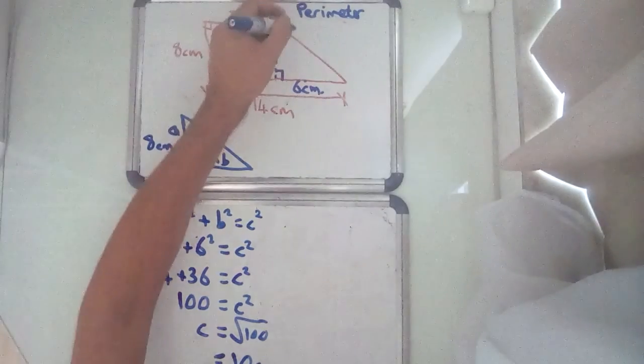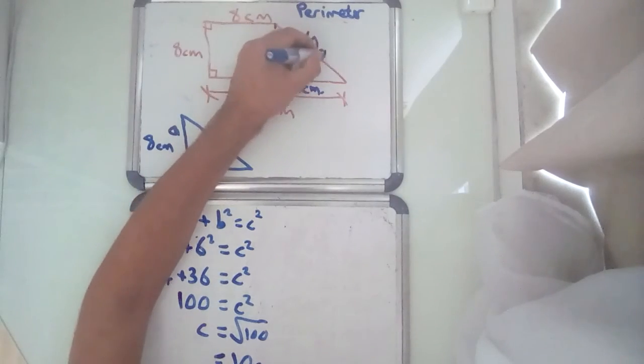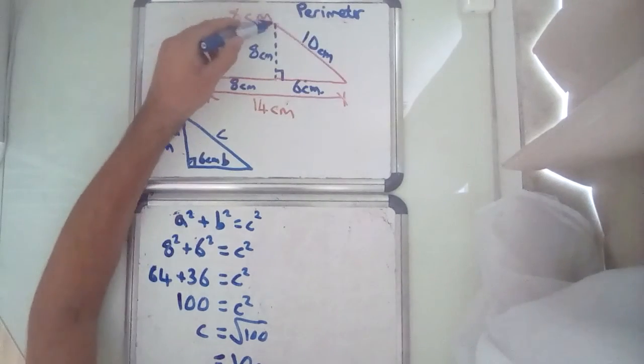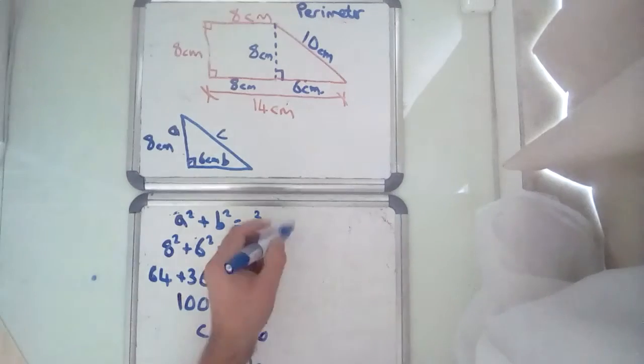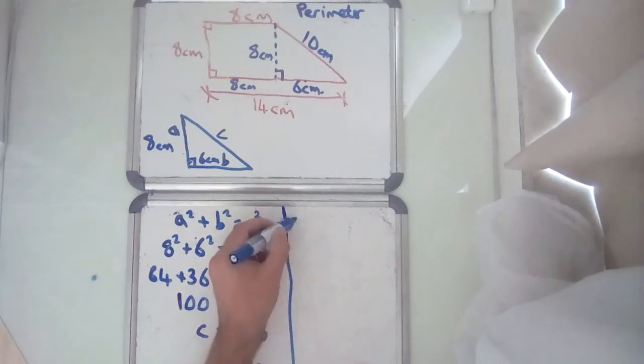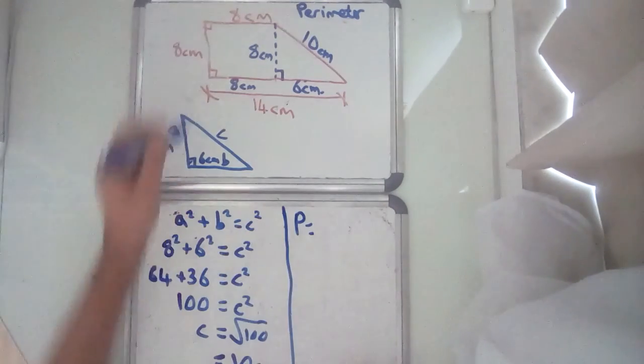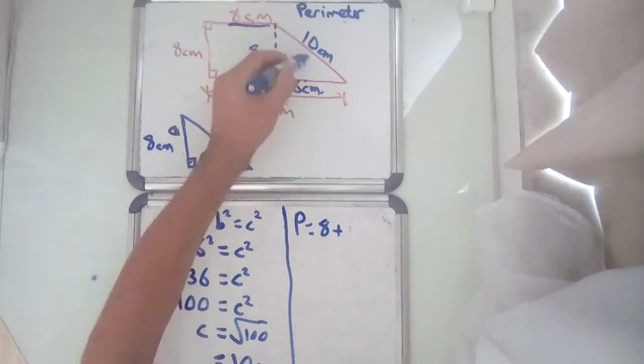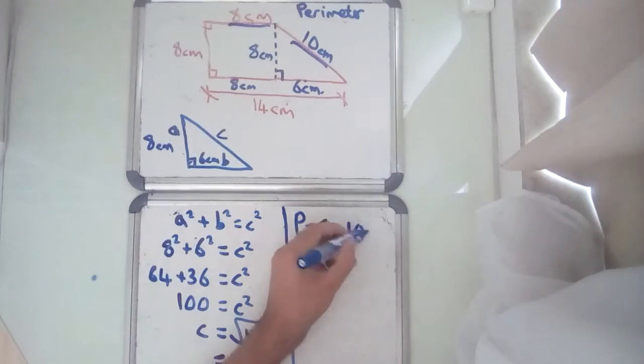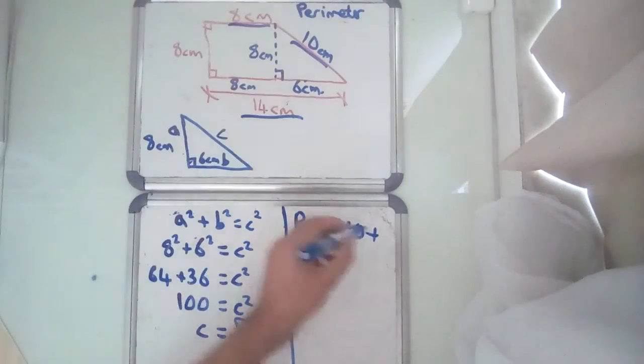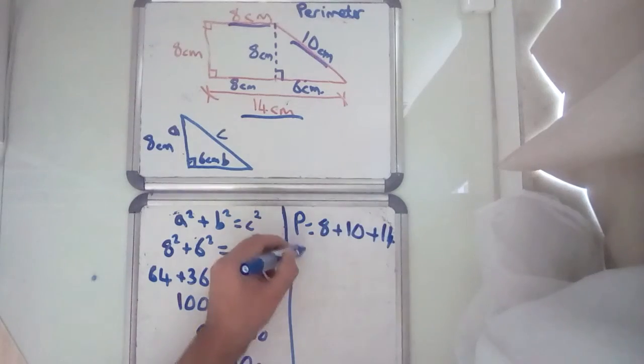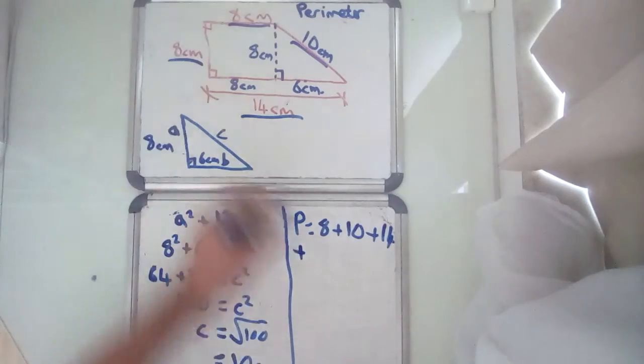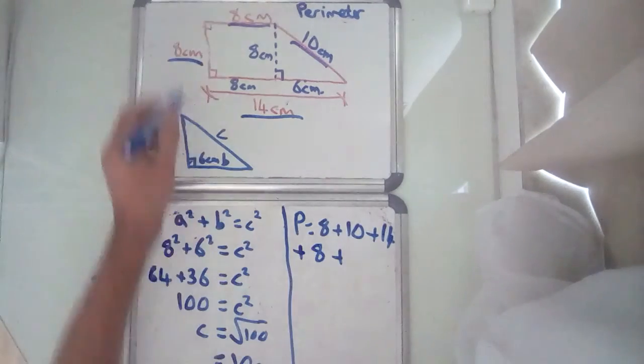So now, if I go back to the diagram, if C is 10 centimetres, for the perimeter of the shape, you just need the outside, so the perimeter equals 8 plus 10 plus 14 plus 8.